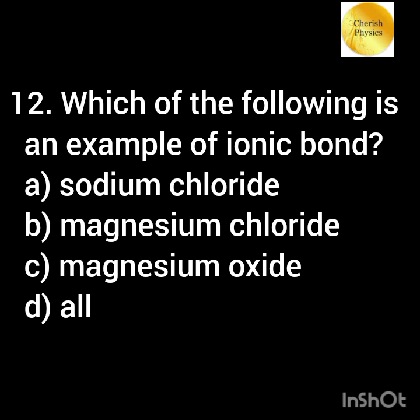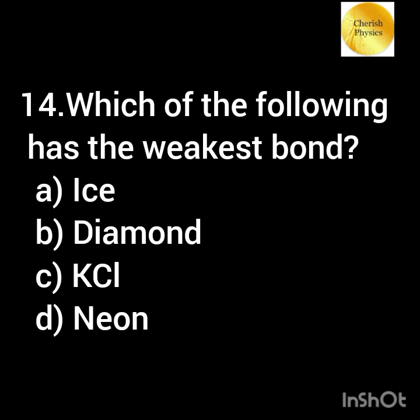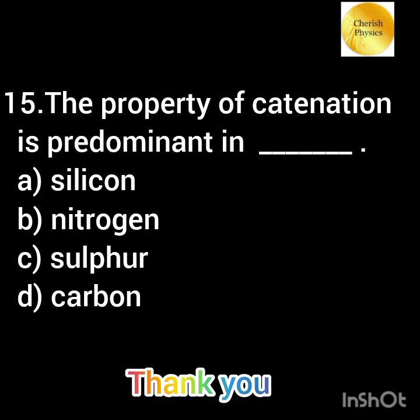Which of the following is an example of ionic bond? Which of the following is an example of covalent bond? Which of the following has the weakest bond? The property of catenation is predominant in...